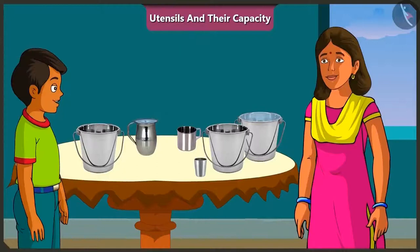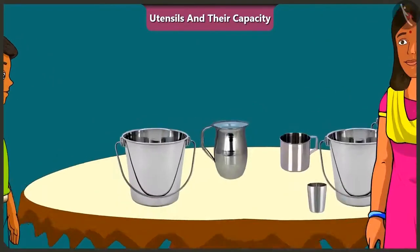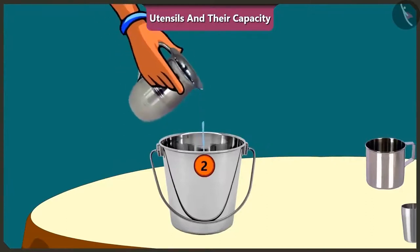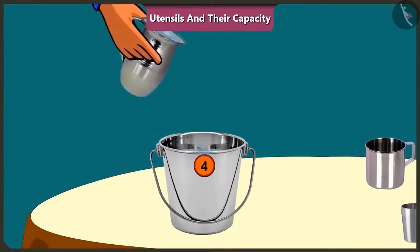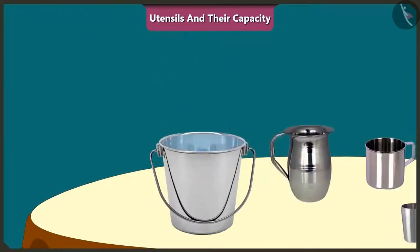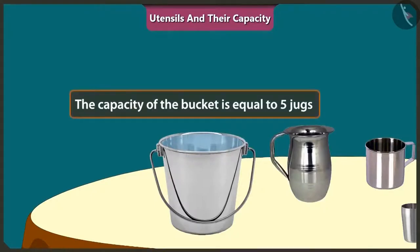Come on, let's try filling this bucket with this jug. One, two, three, four, five. The whole bucket got filled with just 5 jugs of water. This means the capacity of this bucket is equal to 5 jugs of water.